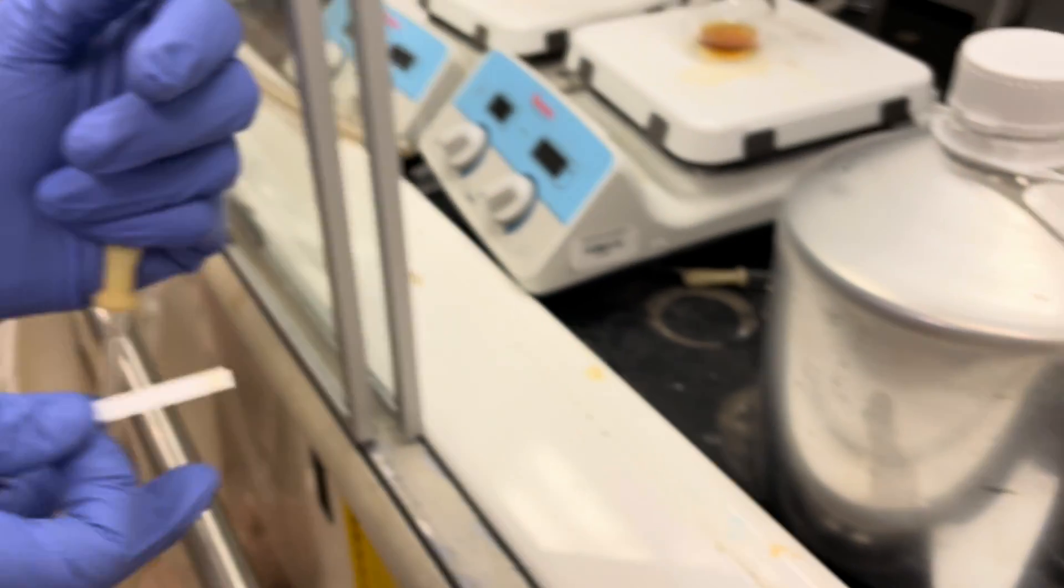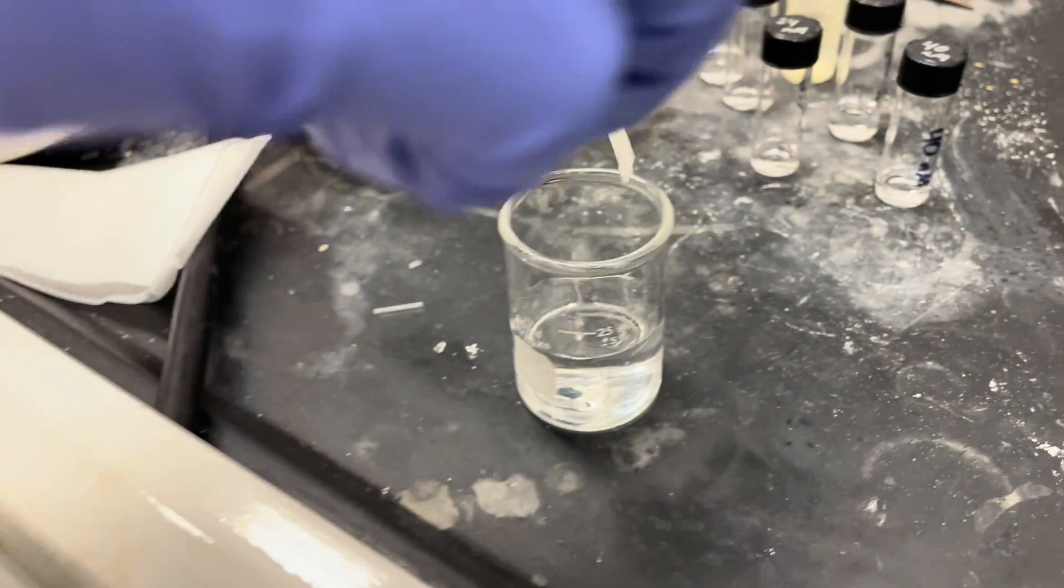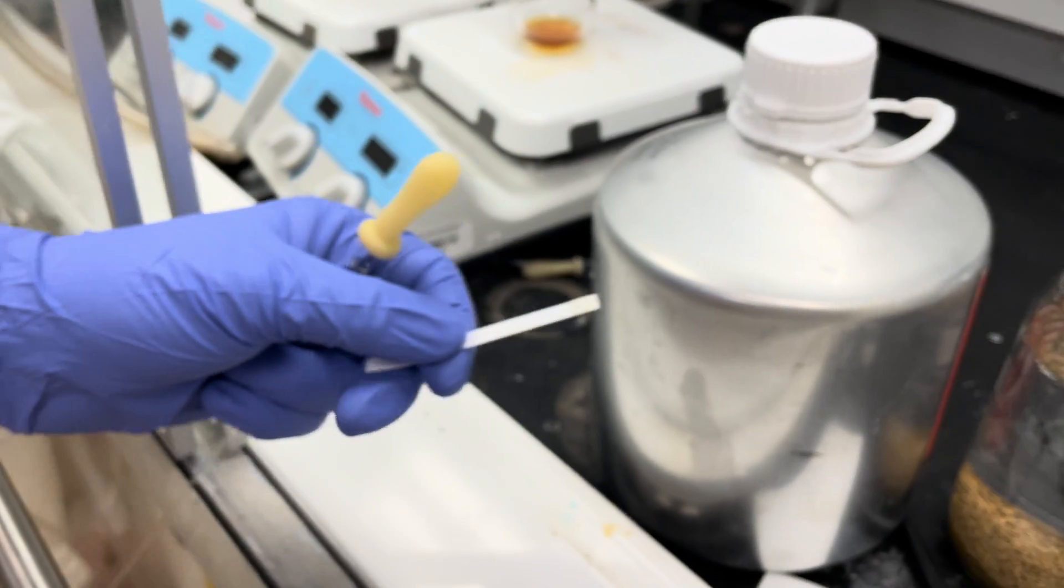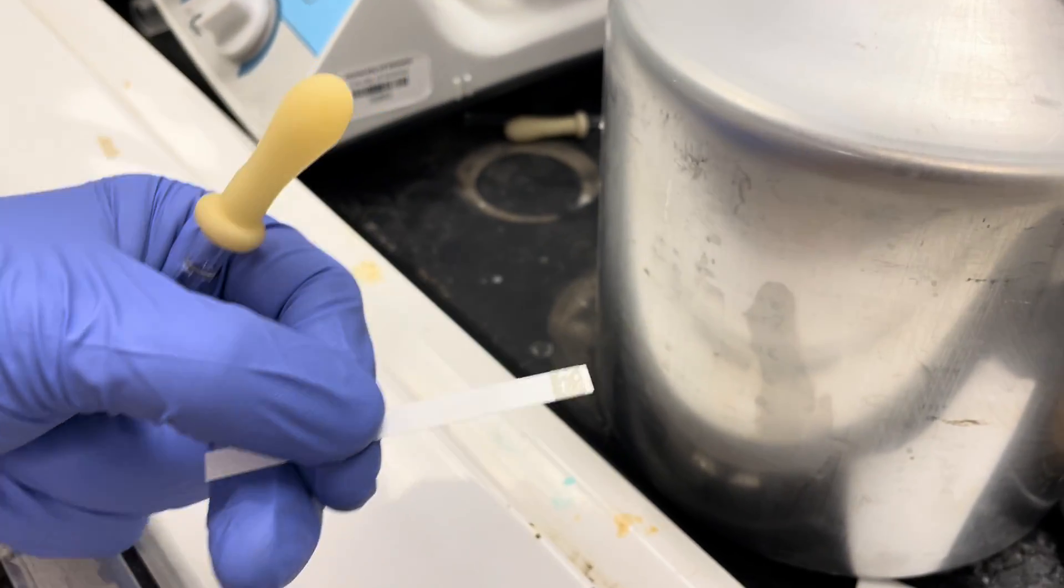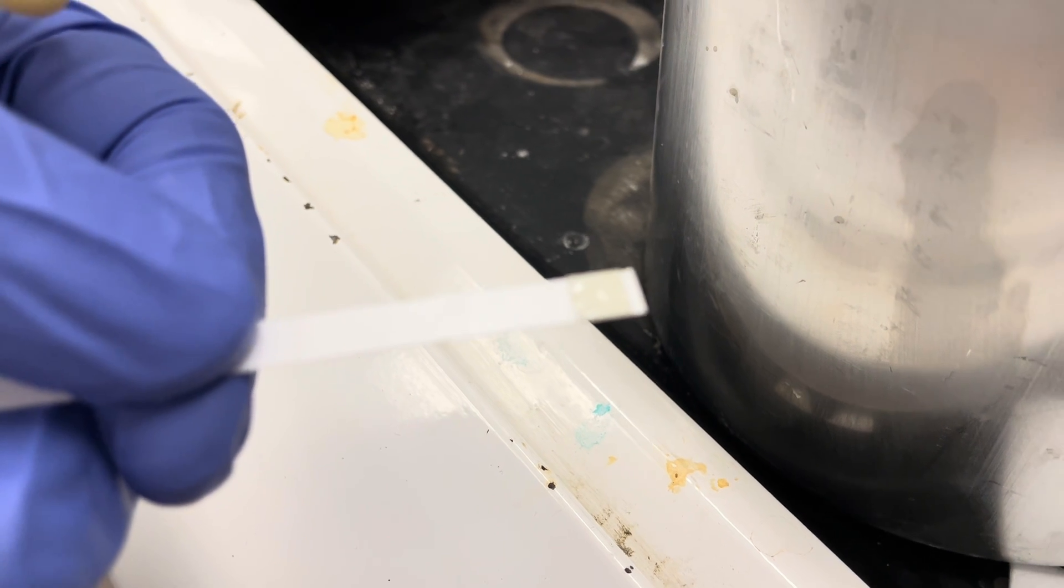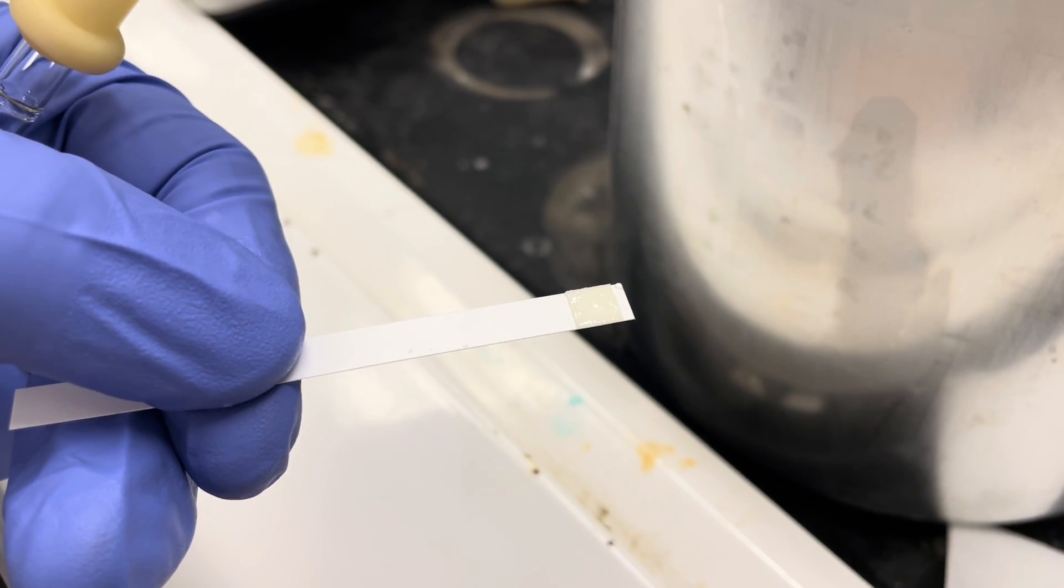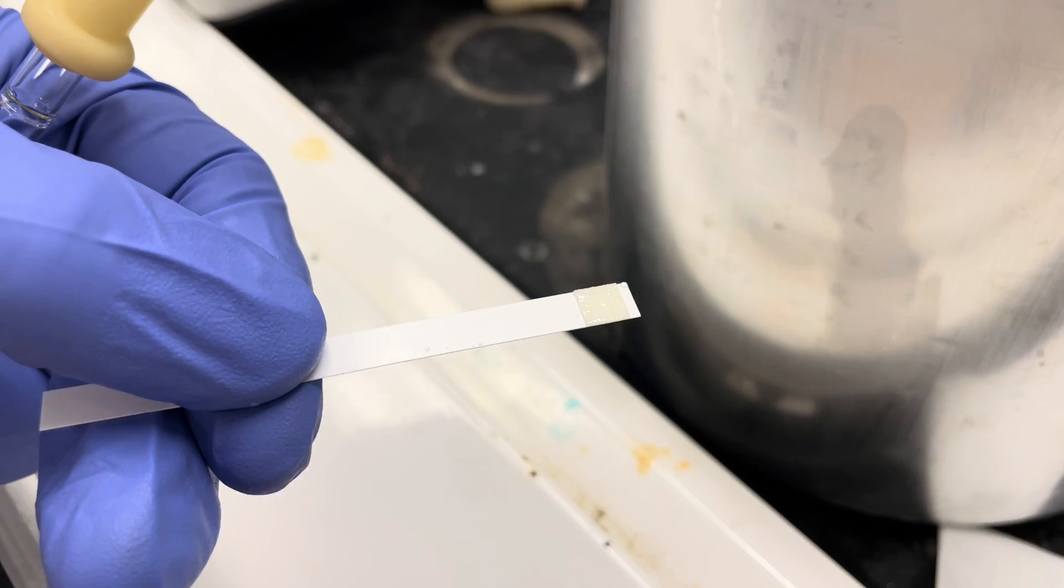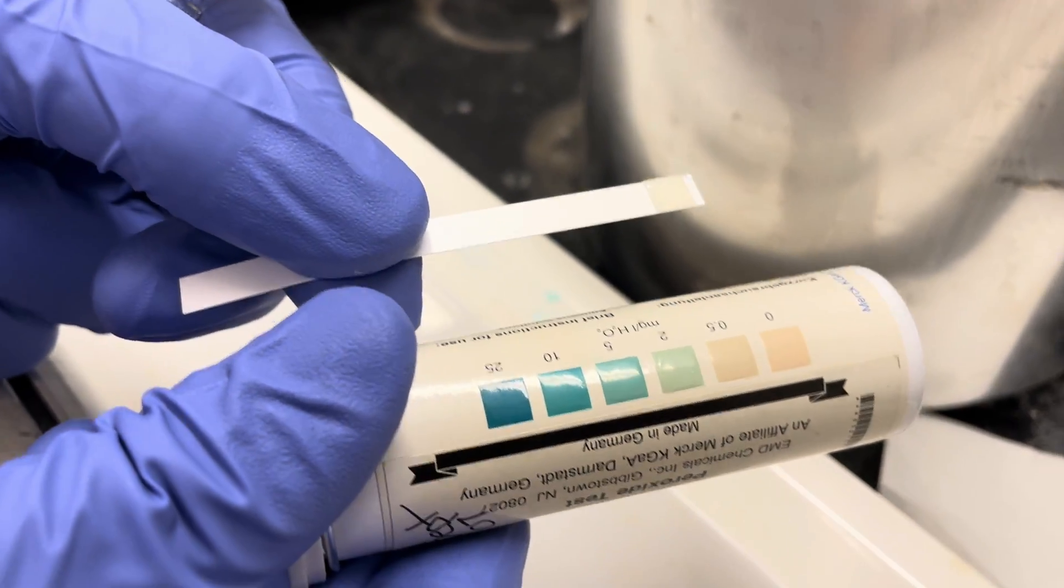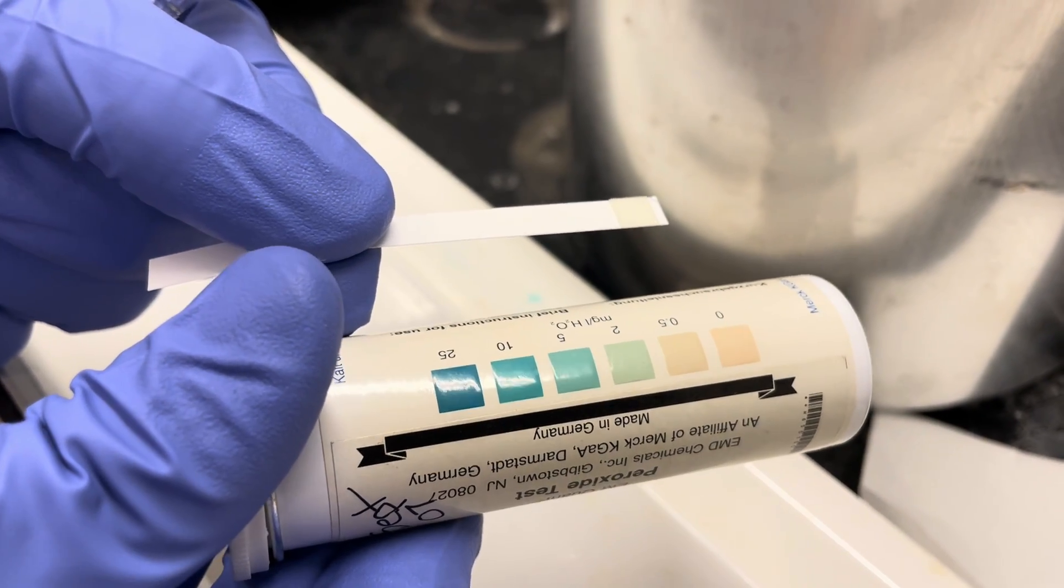Once it's evaporated, it needs to be dipped in water and then read after 15 seconds. This is just some deionized water here. So after 15 seconds you can see this diethyl ether does not have any peroxides in it.